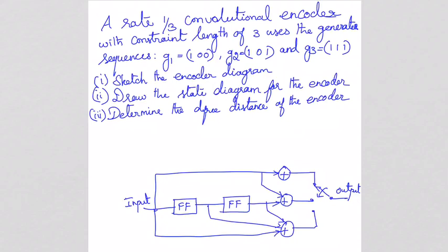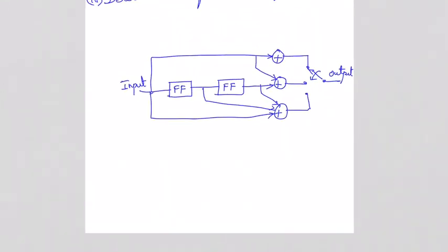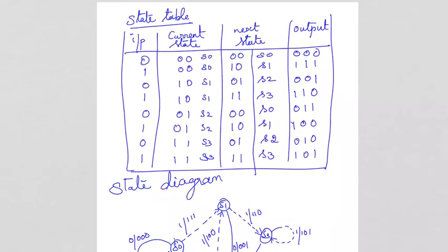The encoder diagram is now drawn based on the constraint length and the generator sequences. Next, we draw the state diagram. To draw the state diagram, we need to first fill up the state table.